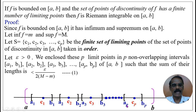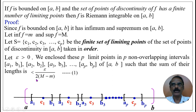The point cₚ is enclosed by the closed interval [aₚ, bₚ], such that the sum of their lengths is less than ε / (2(M − m)).